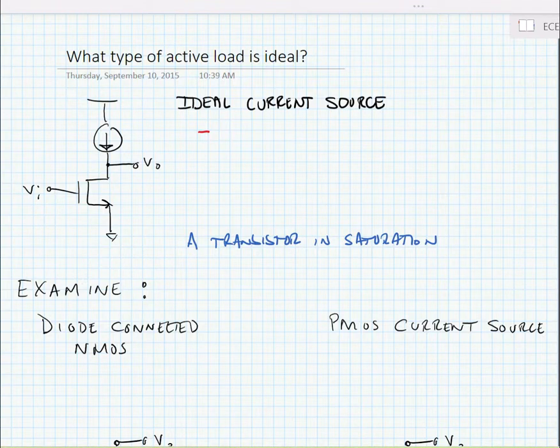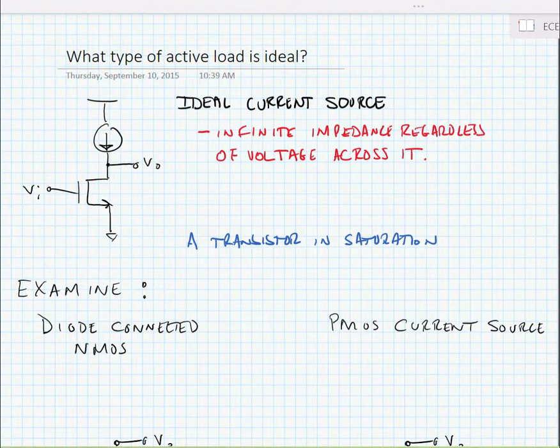When we look at an amplifier on an integrated circuit, we look at an ideal current source. This is actually the best possible load that we could have, and the reason is it presents an infinite impedance regardless of the voltage across it.